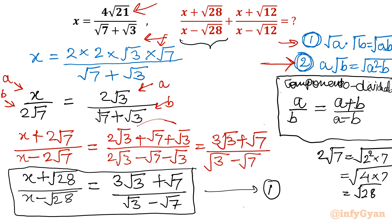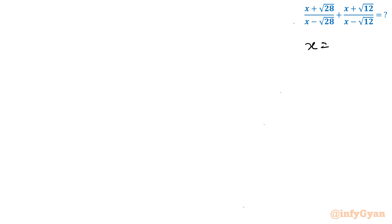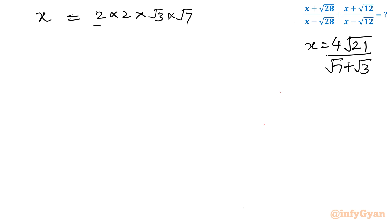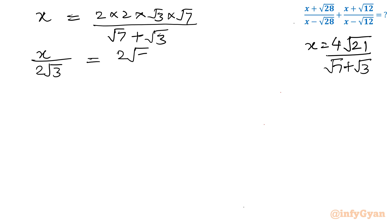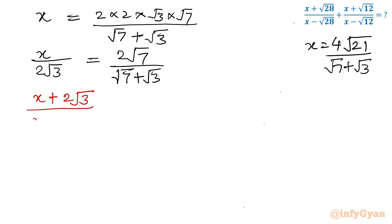Now I will divide both sides of the original x expression by 2√3. Starting from x = 2 × 2 × √3 × √7 / (√7 + √3), dividing both sides by 2√3 gives x/(2√3) = 2√7 / (√7 + √3). I will again apply componendo and dividendo — adding both numerator and denominator in the numerator, and taking their difference in the denominator.